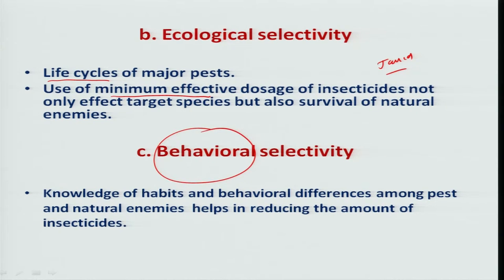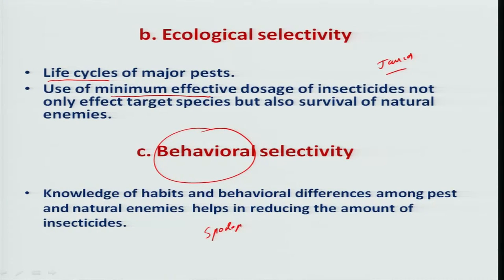The another important insecticidal selectivity is behavioral selectivity. Based on studying the insect behavior — because each species has its own behavior and there is variation from insect to insect — within the insect, larvae have a different behavior and adults have a different behavior. In case of Spodoptera, it is a leaf-eating caterpillar which is a polyphagous pest on many crops, wherein the larvae are the damaging stage, which is nocturnal in habit — meaning it feeds during the nighttime only.